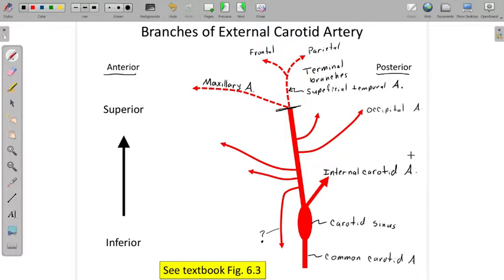Okay, let's do the anterior branches first. The first branch is the superior thyroid. We'll say more about each of these branches in a moment. Going from inferior to superior, the first branch off of the external carotid is the superior thyroid artery.